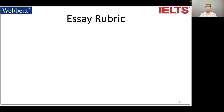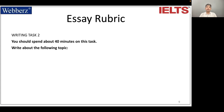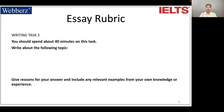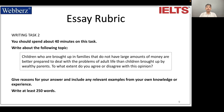First, the essay rubric. Rubric means a set of instructions for the essay. Writing Task 2 — when you go in the real exam, this is what it will look like. You should spend about 40 minutes on this task. Write about the following topic, and below this the topic would come. After the topic, it will be written: give reasons for your answer and include any relevant examples from your own knowledge or experience. Write at least 250 words. The topic is: children who are brought up in families that do not have large amounts of money are better prepared to deal with problems of adult life than children brought up by wealthy parents. To what extent do you agree or disagree with this opinion? This is an essay rubric and a copy of an essay which came in the real exam.